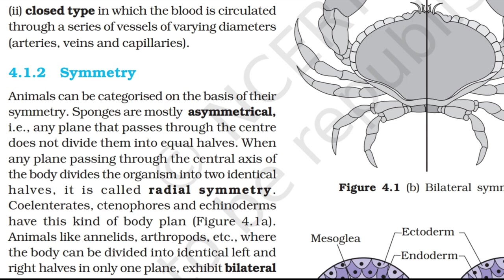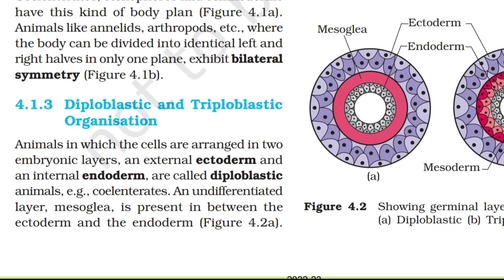Topic 4.1.2: Symmetry. Animals can be categorized on the basis of their symmetry. Sponges are mostly asymmetrical — any plane that passes through the center does not divide them into equal halves. When any plane passing through the central axis of the body divides the organism into two identical halves, it is called radial symmetry. Cnidarians, ctenophores and echinoderms have this kind of body plan. Animals like annelids and arthropods, where the body can be divided into identical left and right halves in only one plane, exhibit bilateral symmetry.